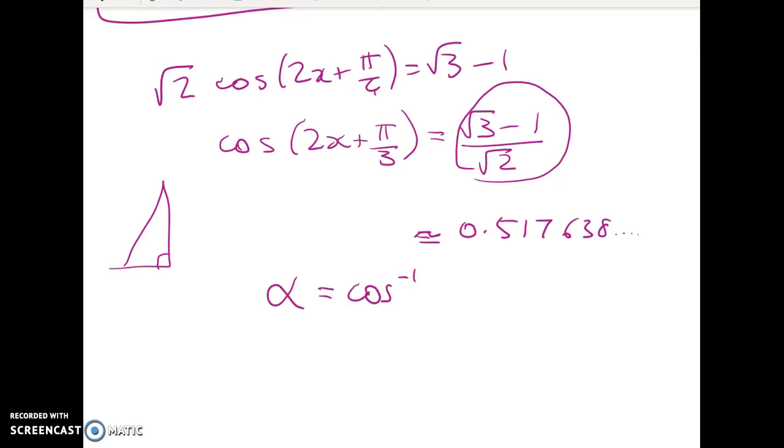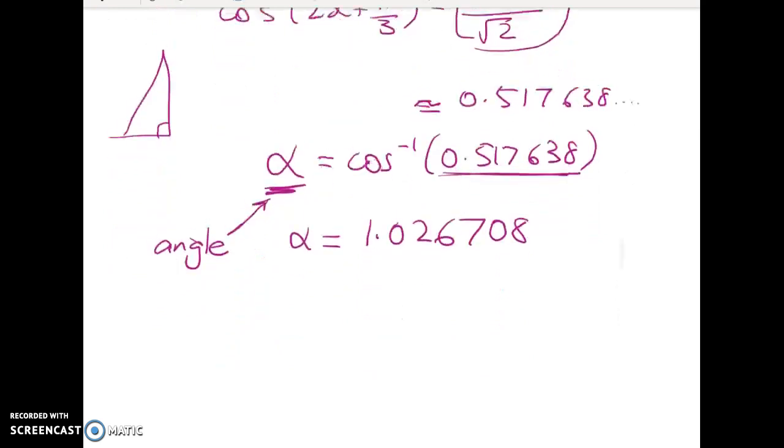Now what we're going to look for first is the principal value for this equation. So α is the principal value of this. So what do I mean by this? Well, what angle? Alpha is an angle, right? This is the angle whose cosine is this number here.